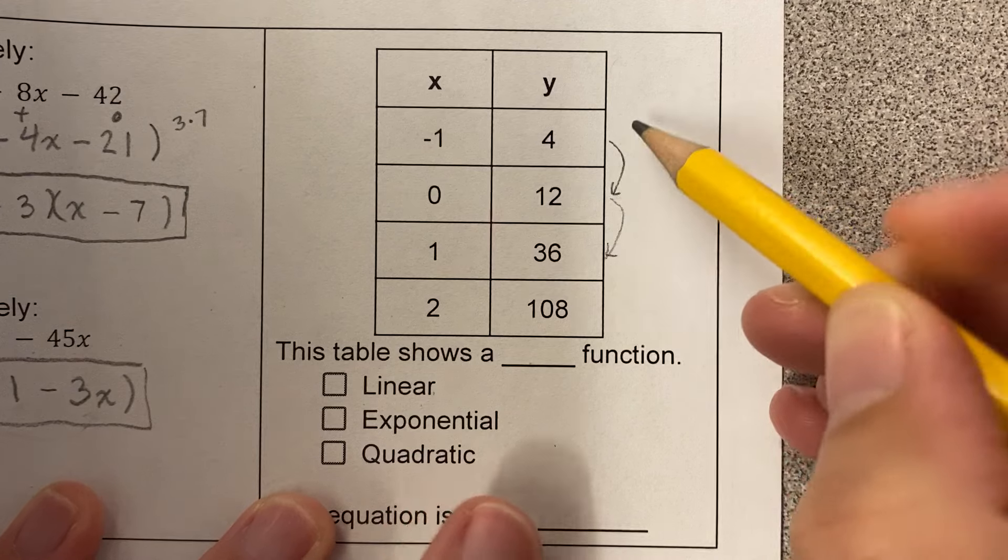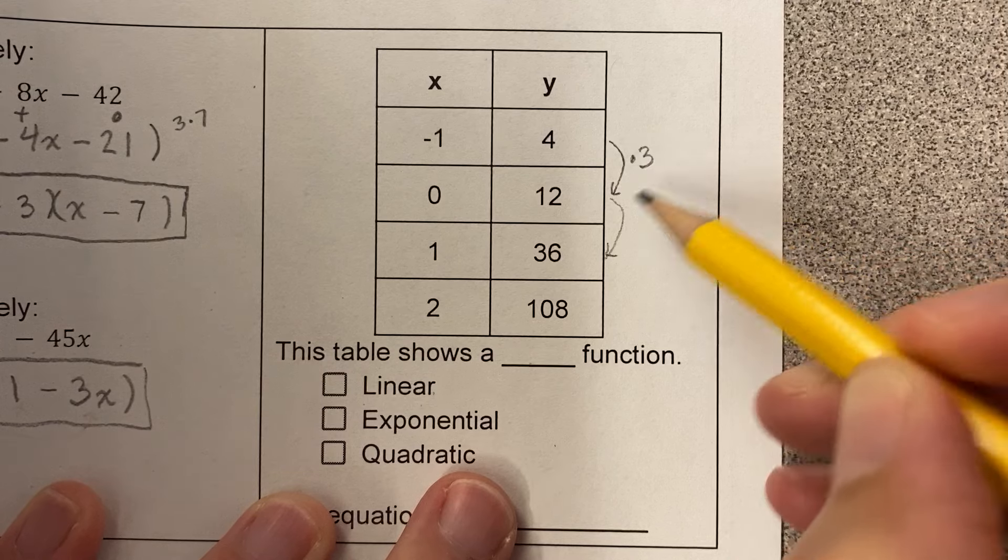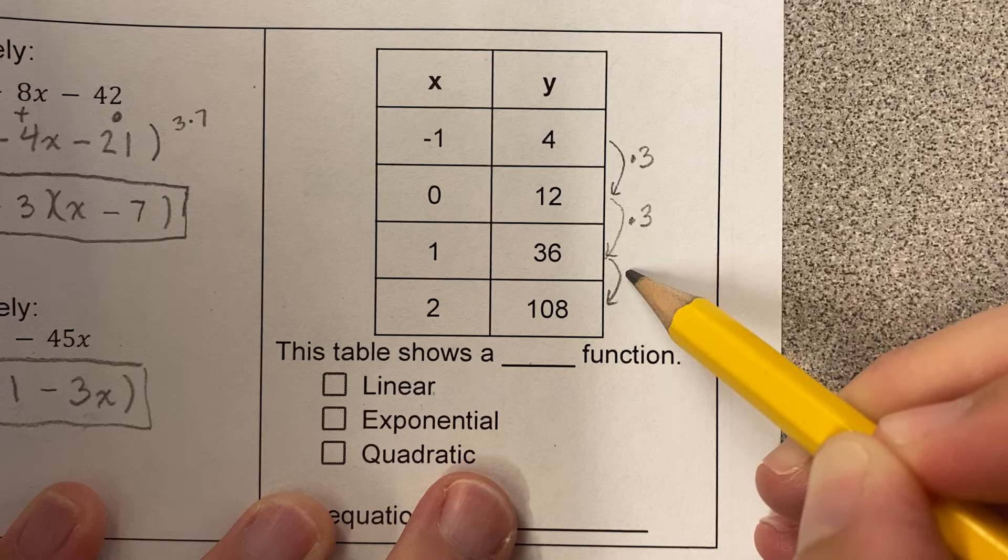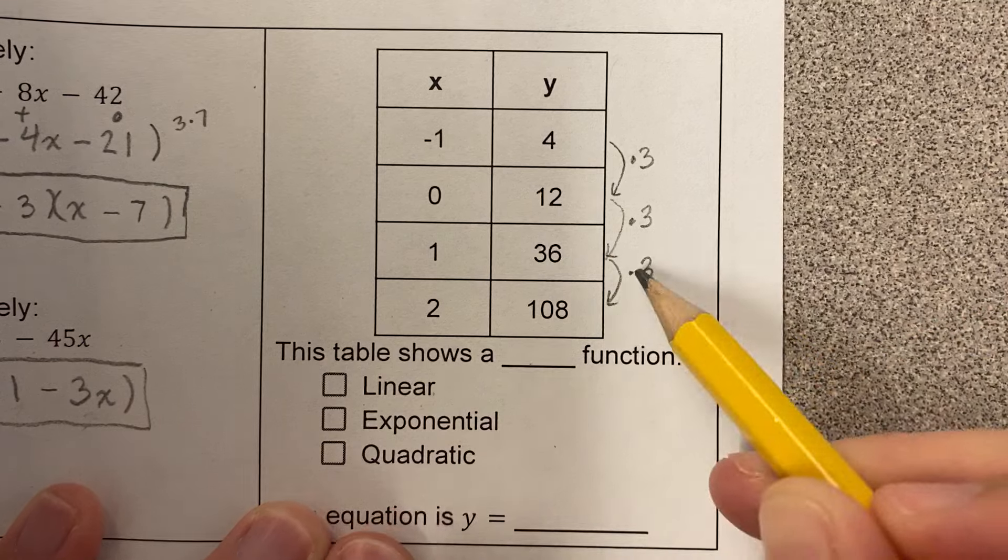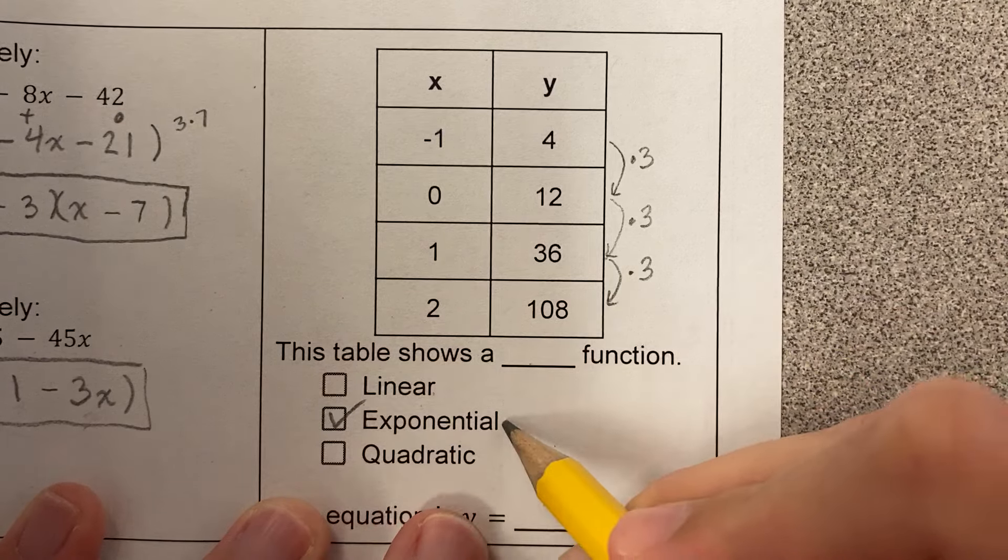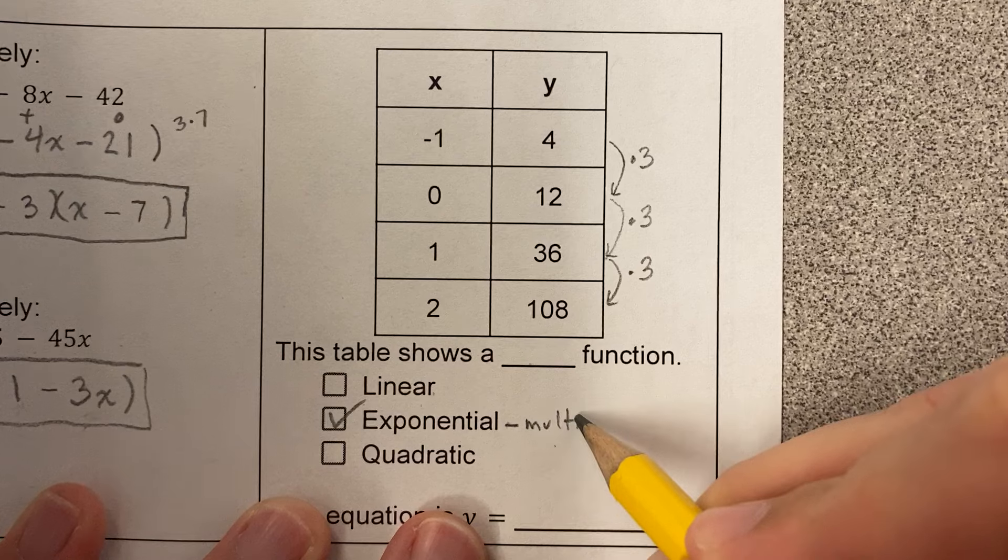4 times what is 12? Well, 4 times 3 is 12. Is 12 times 3 36? Yes, it is. Is 36 times 3 108? Yes, it is. So this is multiplying. The pattern is multiplying. And so that is exponential. The exponential pattern is multiplying.